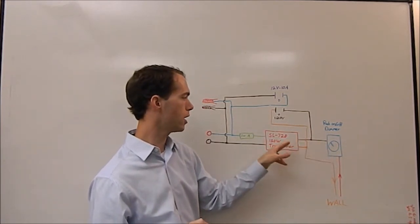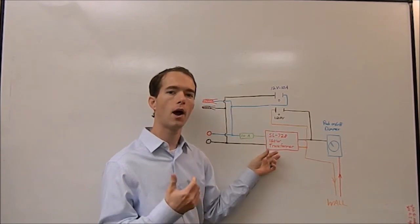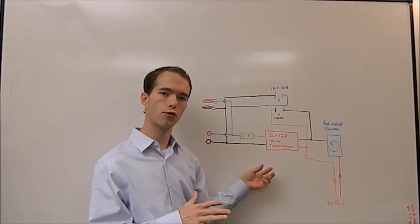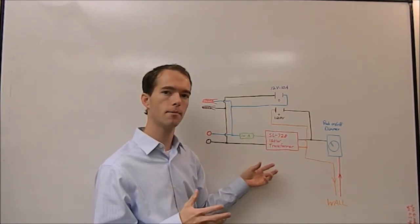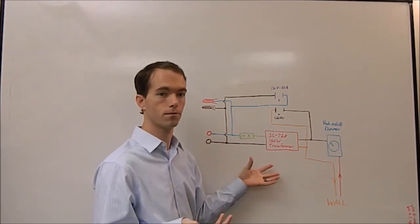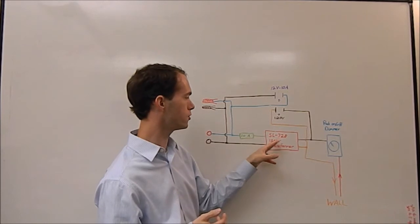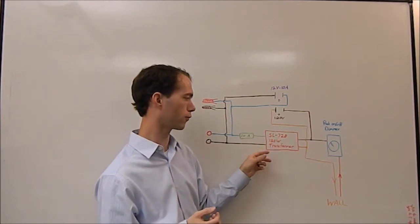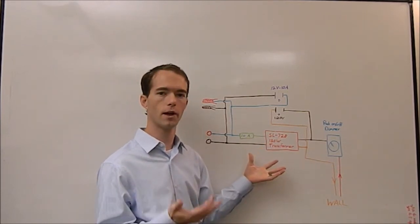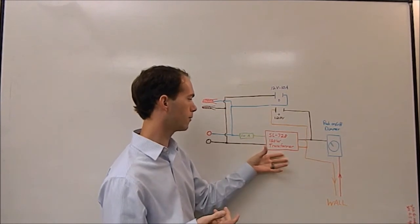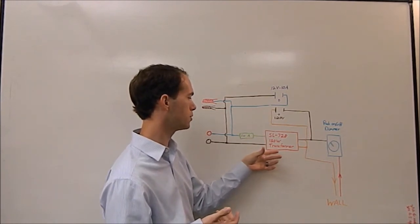Coming out of the dimmer switch I go to my transformer. Now I use an electronic instead of a magnetic transformer, they work a little bit differently but for what I'm doing it's good enough. I use an SL-728 150 watt transformer. If you google these they're like 10 bucks, that's what I was able to find locally.